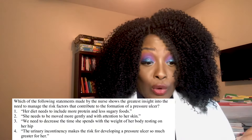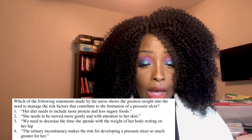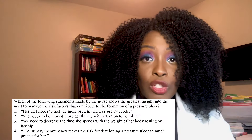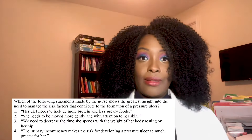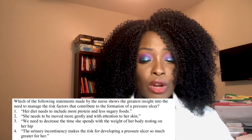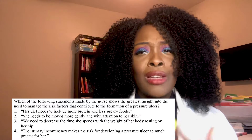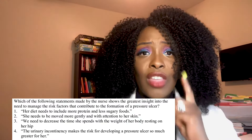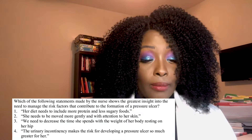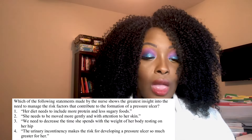Choice two — she needs to be moved more gently with more attention to her skin — is absolutely a nursing intervention for patients with pressure ulcers, but the number one thing to reduce the risk factor is making sure there's no pressure on that side. Two is a good choice, but not as good as three. Choice four — urinary incontinence makes the risk so much greater — is also true and a good answer, but not as strong as three. I covered this in depth in part one: the number one thing is keeping pressure off the site.